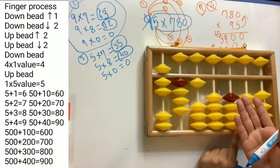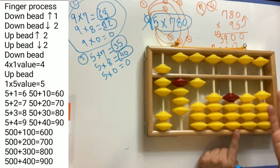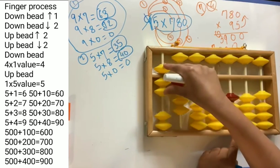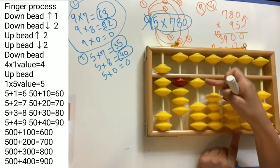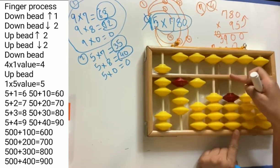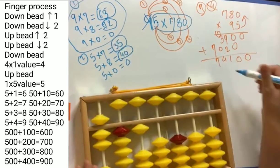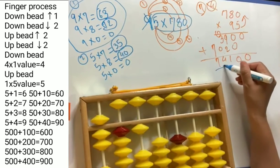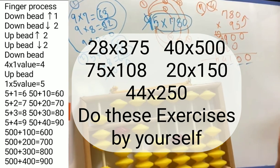Now you have your answer on the abacus, and your answer is 7, 4, 1, 0, 0 — that is 74,100. Let's check: 7, 4, 1, 0, 0. Yes, 74,100!